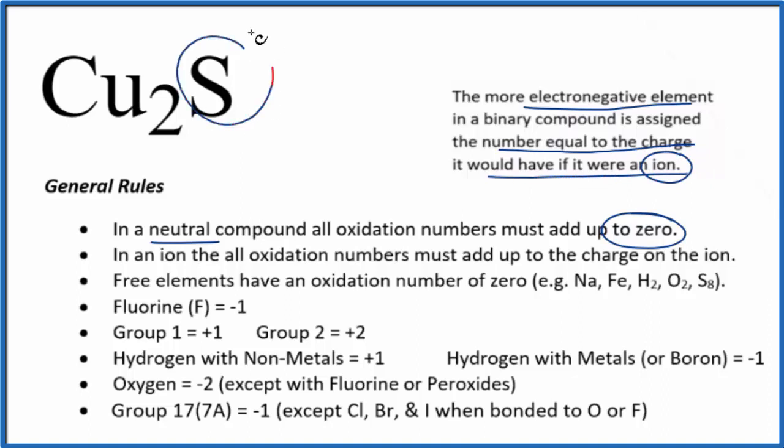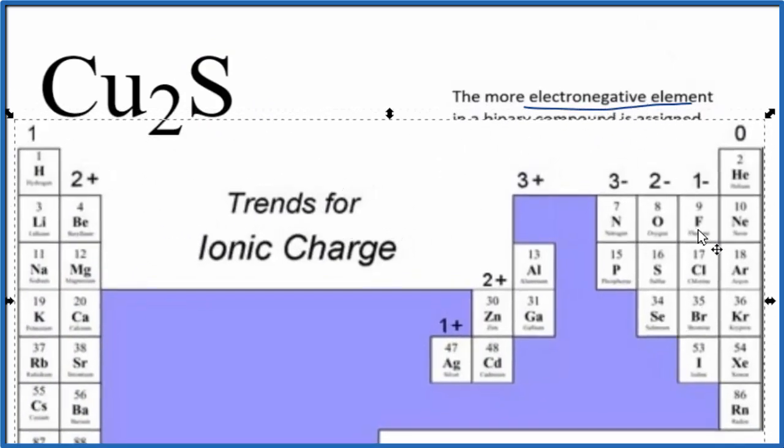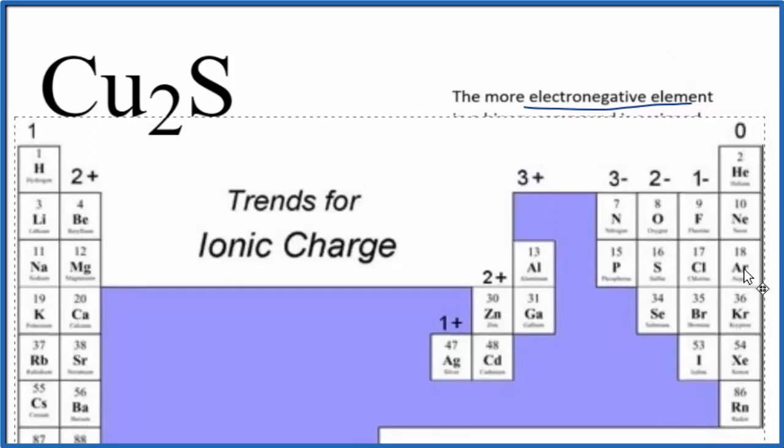So if we look at sulfur here, it's more electronegative. What would its charge be if it were an ion? So on the periodic table, we're looking for sulfur, which is right here. So sulfur, same group as oxygen, has a 2- ionic charge.